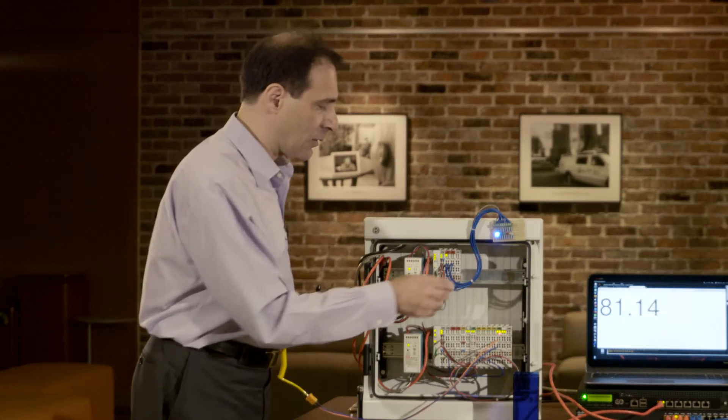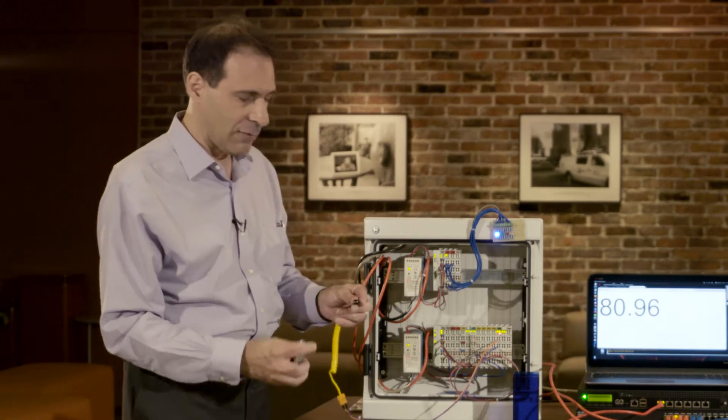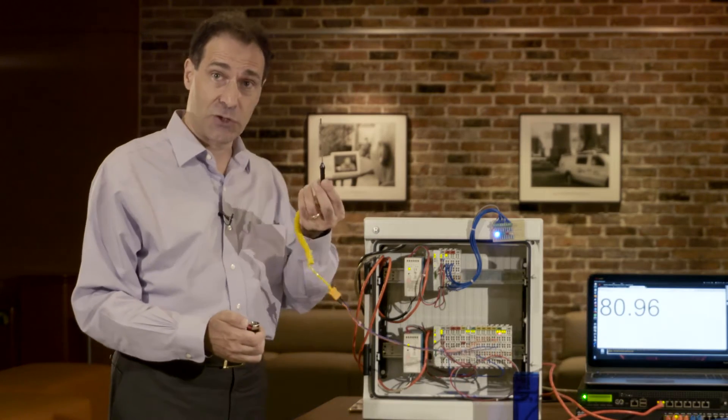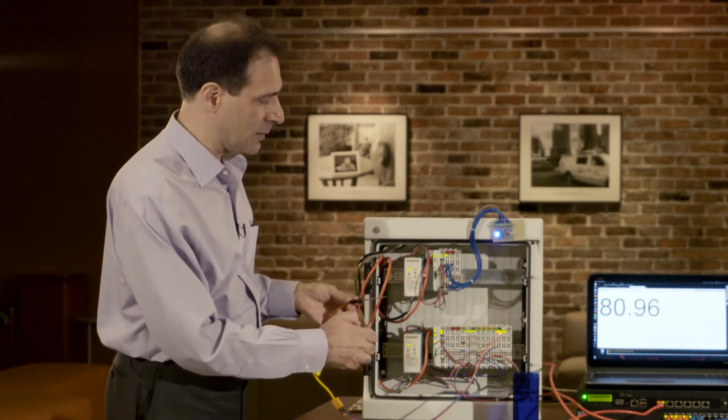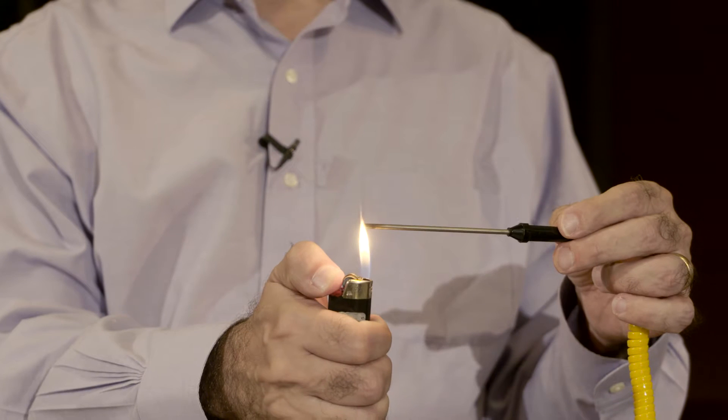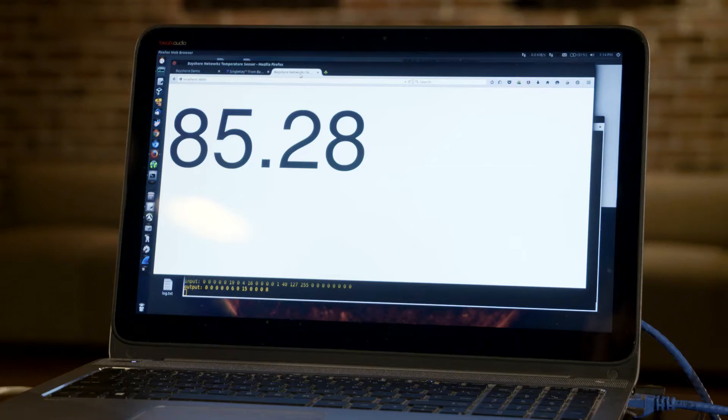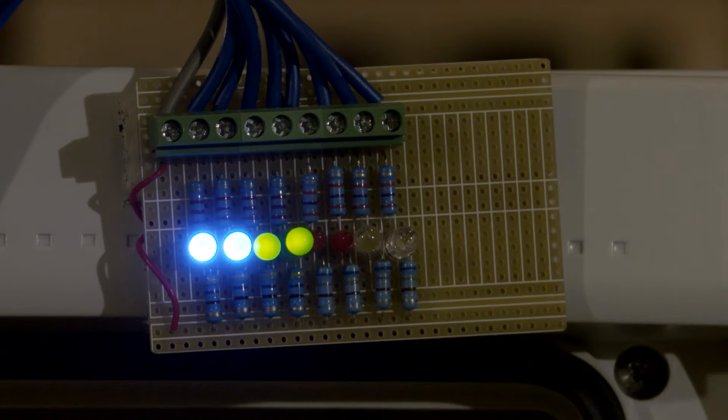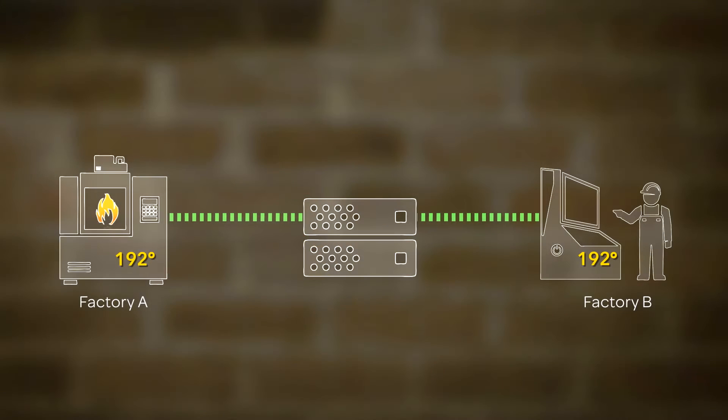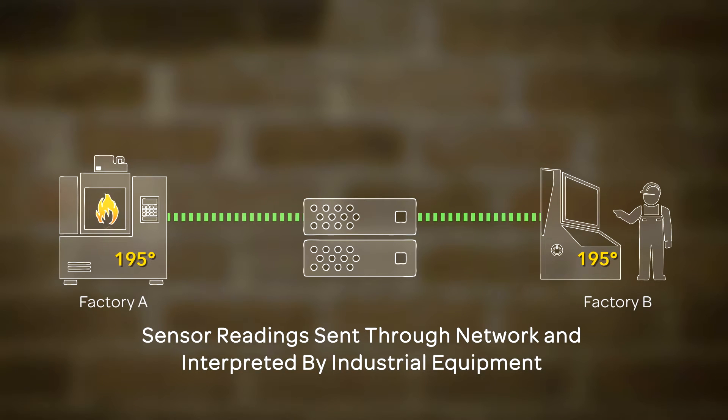Let me show you how the data works. If I change the temperature of the thermocouple, which could be plugged into a pressure vessel or a furnace or any kind of industrial equipment, you can see that the temperature reading changes on our computer application, but it also changes the lights. So the lights are linearly reflecting the temperature, but these are sensor readings being passed through the network that are being interpreted by another set of industrial equipment.